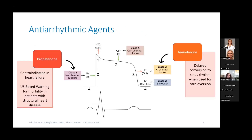Looking at the two antiarrhythmic agents used in this trial — propafenone and amiodarone. Propafenone is a class 1C antiarrhythmic used for its sodium channel blocking properties. It is contraindicated in heart failure and shares the U.S. boxed warning with other 1C antiarrhythmics like flecainide for mortality in patients with structural heart disease, based on the CAST trial results — though the CAST trial did not use propafenone directly. Amiodarone is a class 3 antiarrhythmic; when used for rhythm control, we use it for its potassium channel blocking properties, though it shares properties from all four antiarrhythmic classes. Notably, amiodarone has a delayed effect in converting patients to sinus rhythm when used for cardioversion.